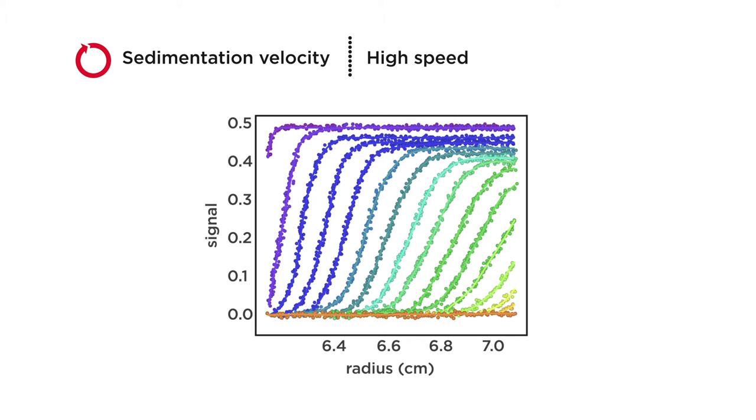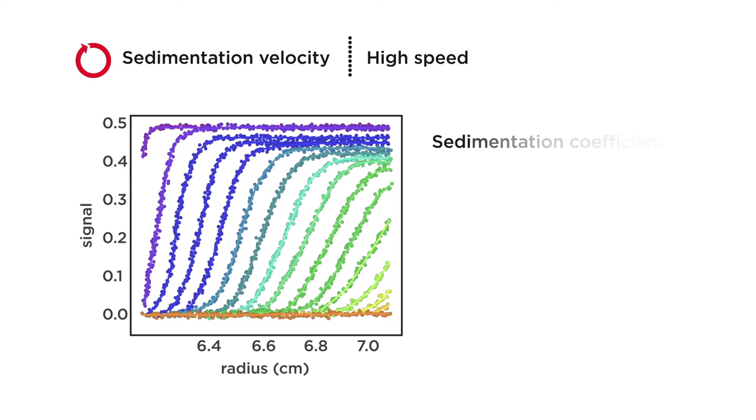The distribution movement over time is used to calculate the sedimentation coefficient, diffusion coefficient, effective mass of solute components, shape, and molecular weight of the particles under study.